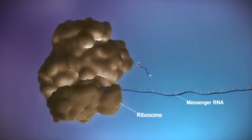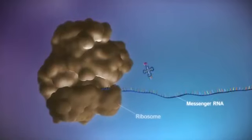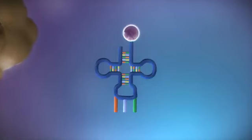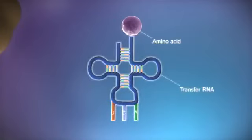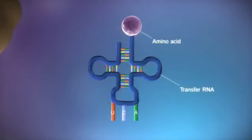The ribosome reads the code in the messenger RNA to produce a chain made up of amino acids. There are 20 different types of amino acid. Transfer RNA molecules carry the amino acids to the ribosome.